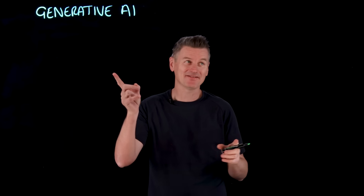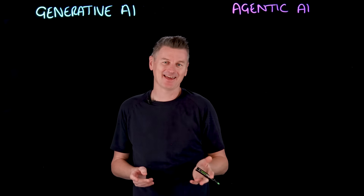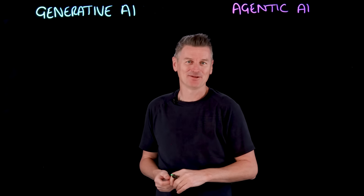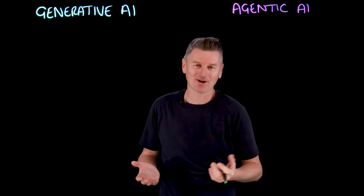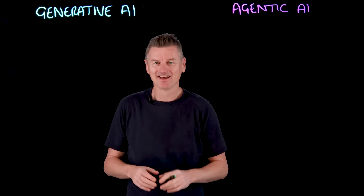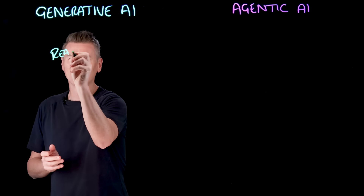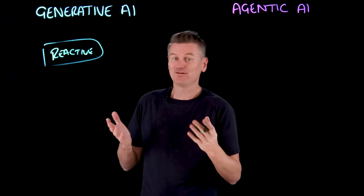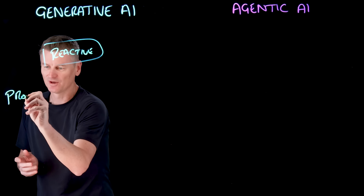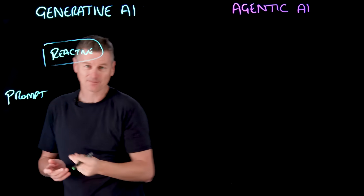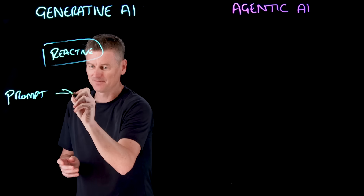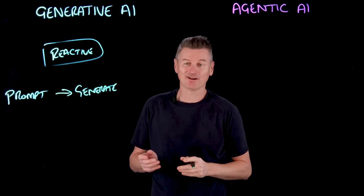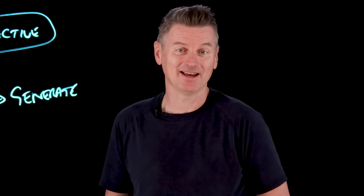What's the difference between generative AI and agentic AI? They're two distinct approaches to artificial intelligence. We're all familiar with generative AI — things like chatbots and image generators. They are fundamentally reactive systems. They wait for you to prompt them, and once you do, their job is to generate some kind of content based upon what you provided in the prompt.